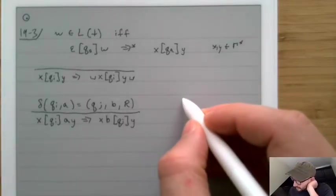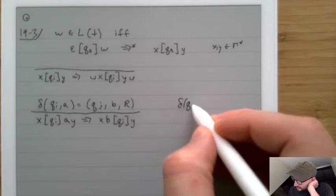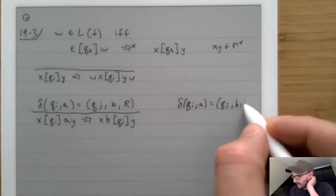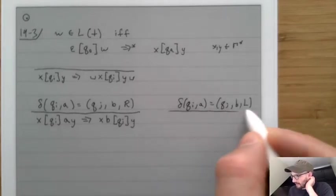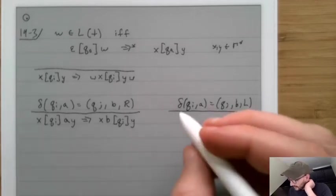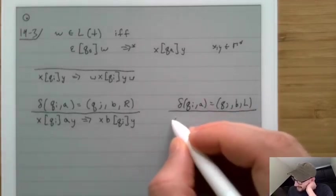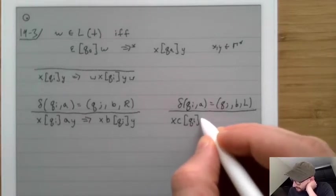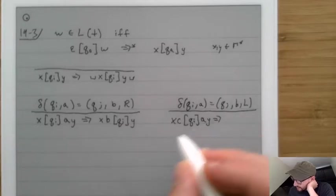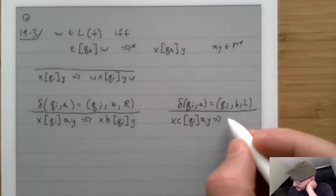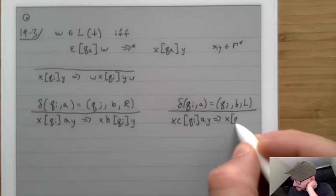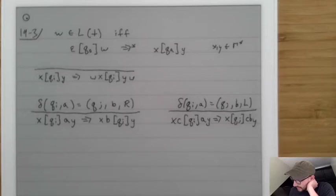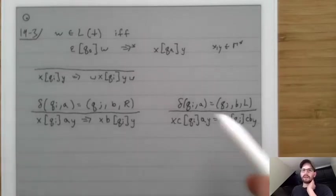Now what if Delta of qi, a equals qj, b, and Left? That means behind us is x and c, we're in state qi, in front of us is a and y. Then we move to the left: x is behind us, we're in qj, and c, b, y is in front of us — because the c that used to be on our left is now on our right.